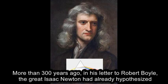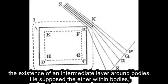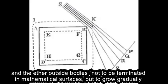More than 300 years ago, in his letter to Robert Boyle, the great Isaac Newton had already hypothesized the existence of an intermediate layer around bodies.